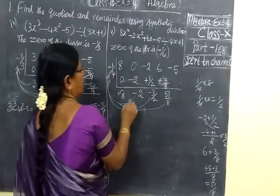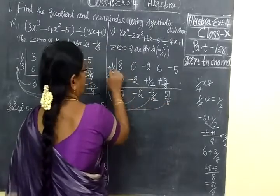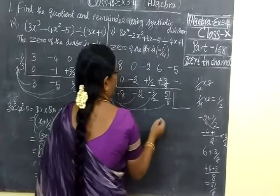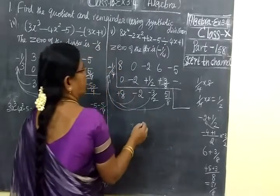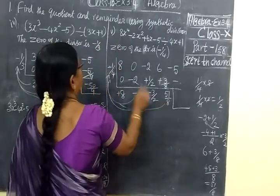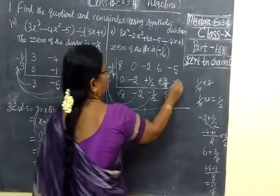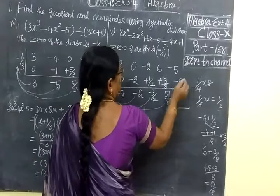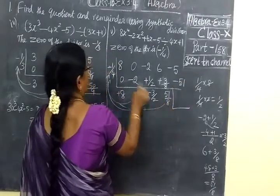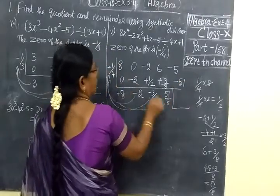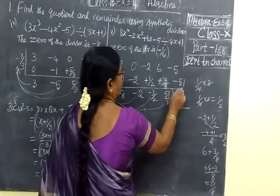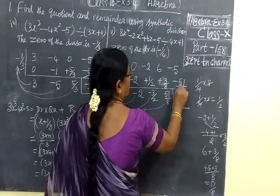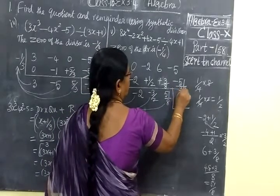Again you are multiplying. Plus into minus is minus. For that you keep the remainder ready. Numerator into numerator: 51. Denominator into denominator: 8 goes to 32. So here we are writing 32.